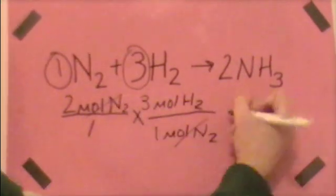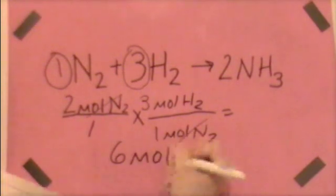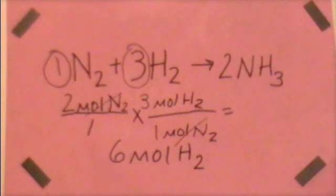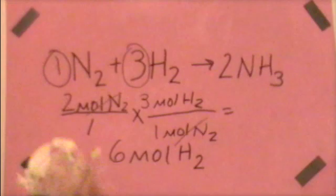Remember to put it this way so that the moles of nitrogen can cancel out. From this equation, we get 6 moles of hydrogen. So 6 moles of H2 are needed to react with 2 moles of N2. Now let's try another one to see if you can get the hang of it.